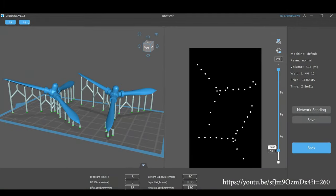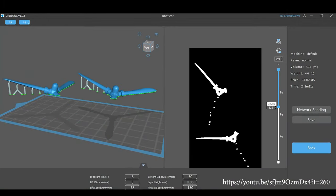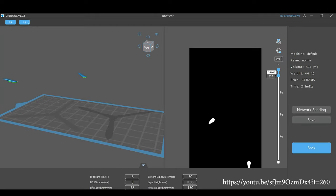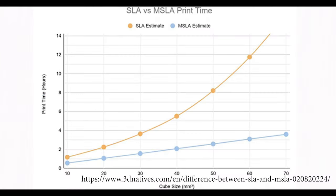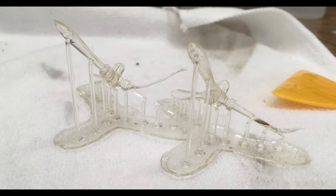Advantages. It is faster than traditional SLA since the entire layer is exposed simultaneously. This speed advantage can significantly reduce printing time, increasing productivity. Additionally, the linear print time allows it to be easily scaled up to accommodate larger build sizes or printing multiple parts at the same time.